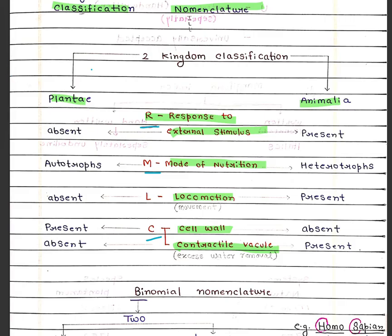Response to external stimuli is absent in Plantae and present in Animalia. Mode of nutrition is autotrophic in Plantae and heterotrophic in Animalia, meaning they are dependent on plants for nutrition. Locomotion is absent in Plantae and present in Animalia. Cell wall is present in Plantae and absent in Animalia. Contractile vacuole — the capability to remove excess water — is absent in Plantae and present in Animalia.